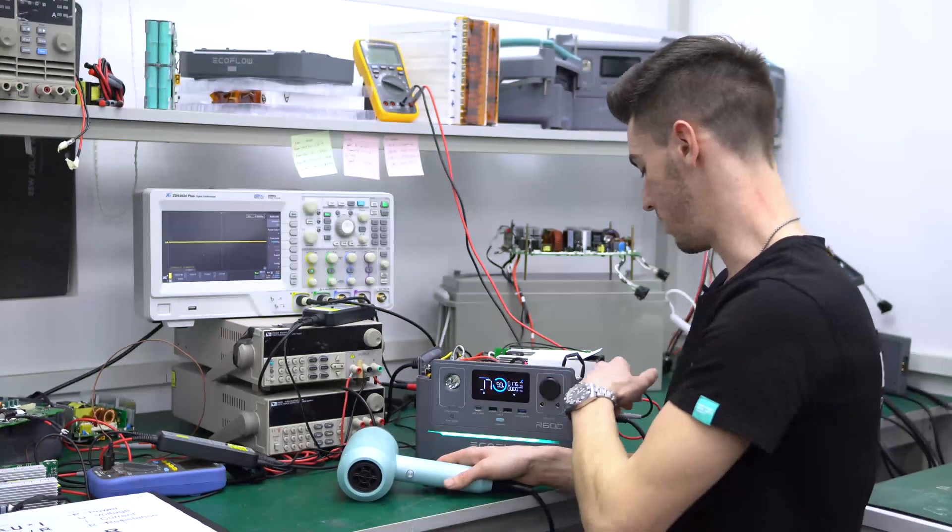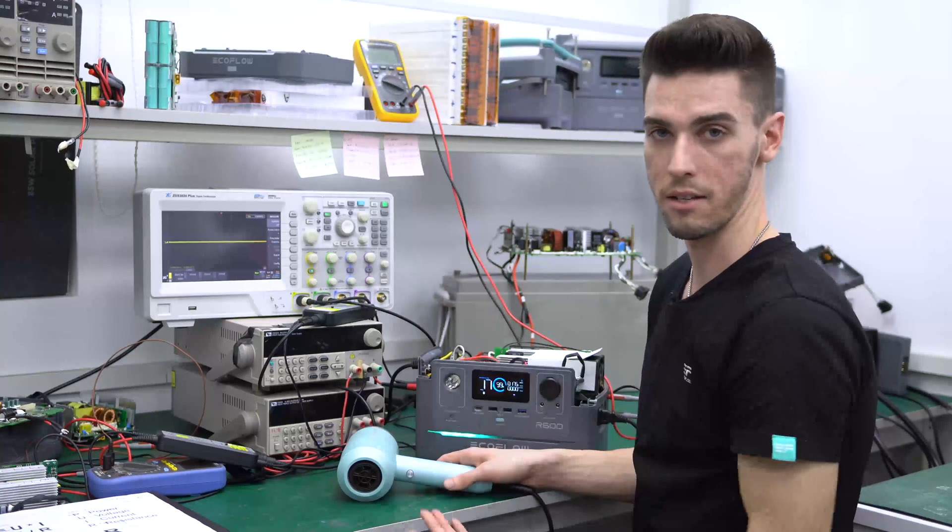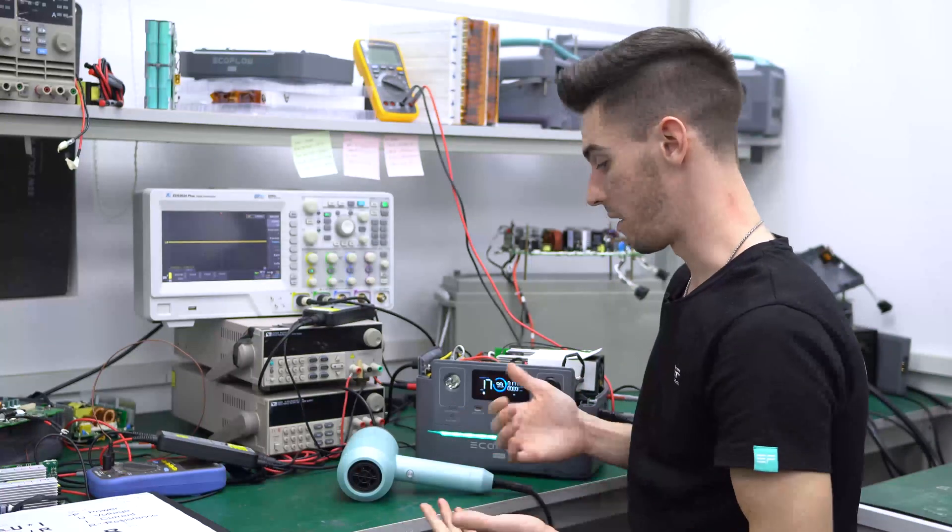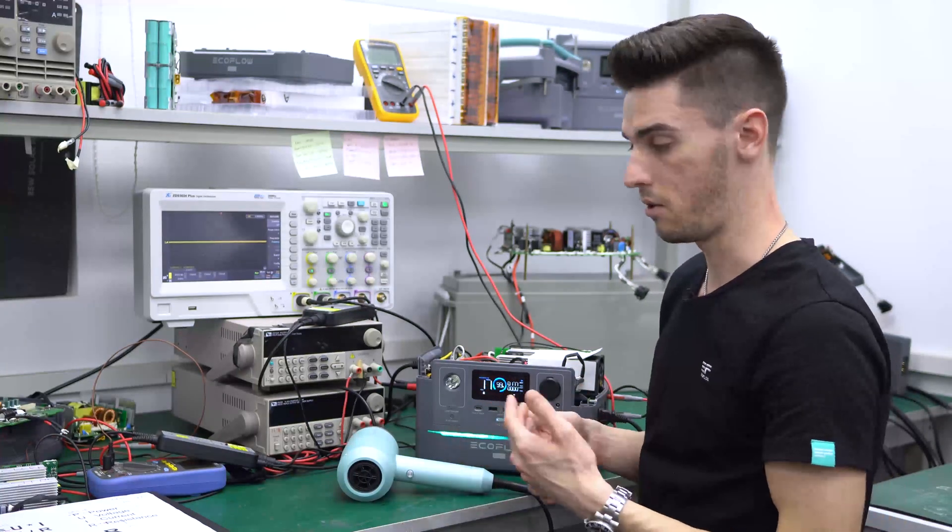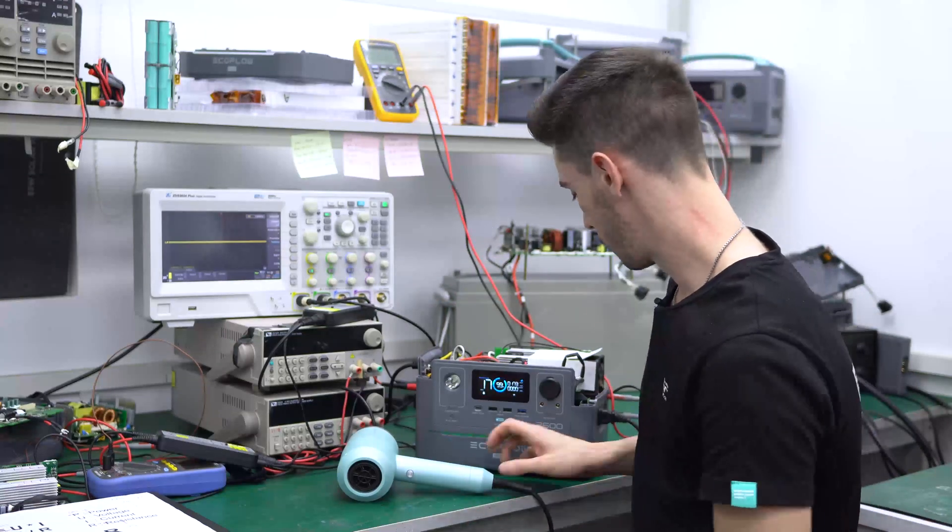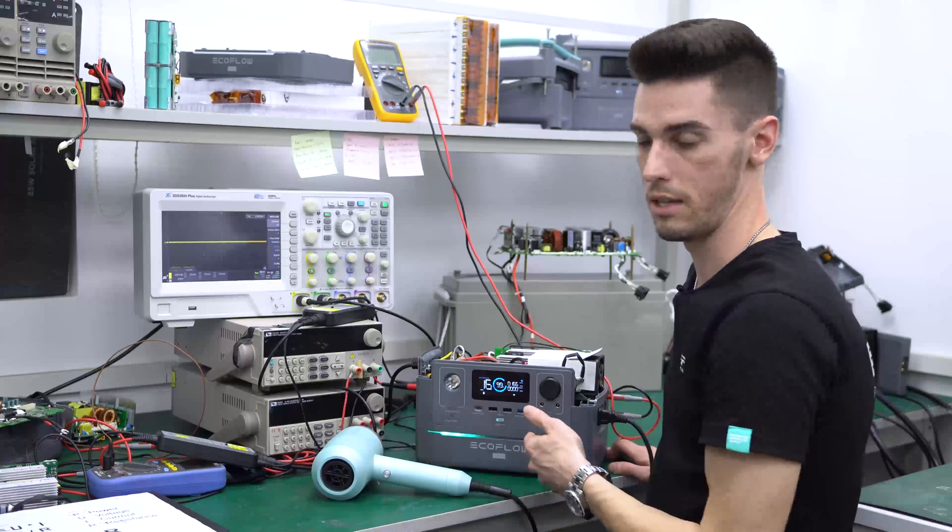So if you're going to want to use a device while the AC input is connected, we recommend that you use something under 600 watts. If you want to run something that's over 600 watts and use the X-Boost feature, just disconnect it from the AC input. While we have all this connected, I also want to go over the UPS function.